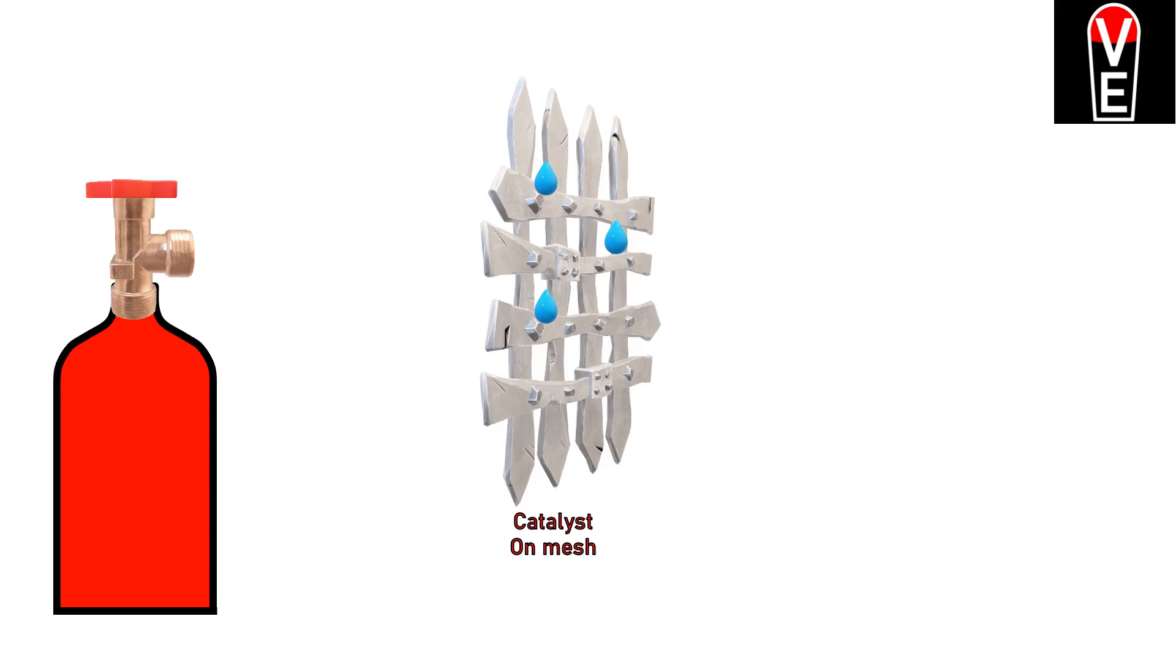Catalytic combustion works as follows. Hydrogen flows above a mesh where the catalyst, like platinum, is on. The air contains oxygen and the catalyst reduces the energy for the reaction between hydrogen and oxygen to water, so that water and vapor is produced.